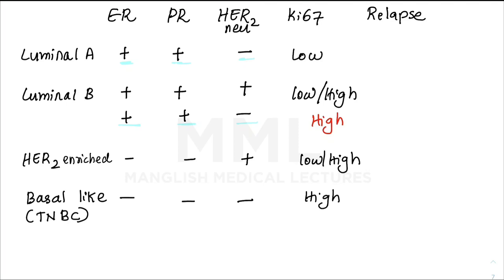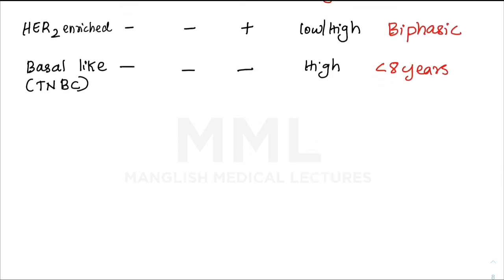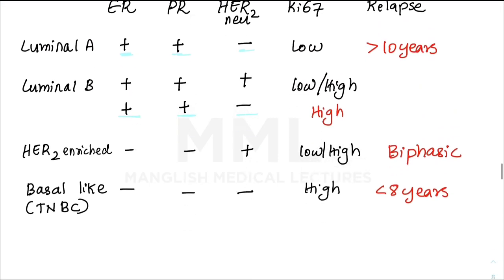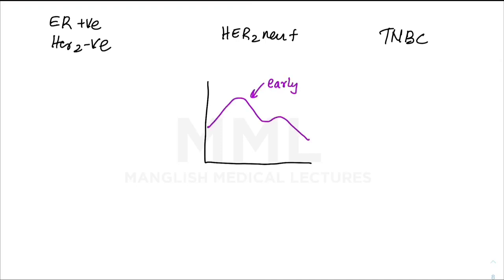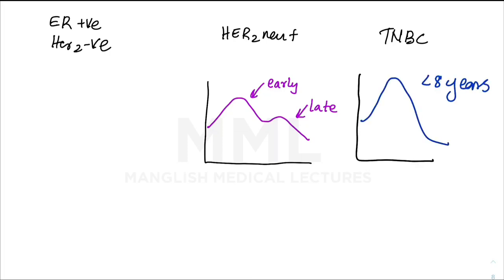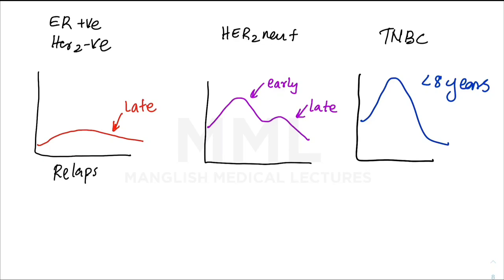Regarding pattern of relapse: a late relapse is seen in Luminal A (ER positive). A biphasic relapse — both early and late — is seen in HER2-positive cancers. An early relapse is seen in basal-like (TNBC). The biphasic relapse response seen in HER2-positive cancer is a key takeaway point.